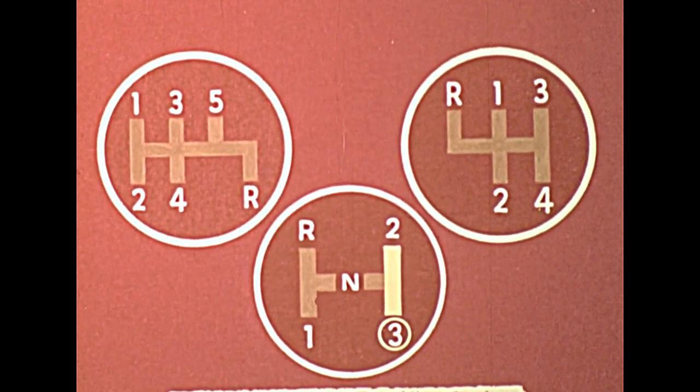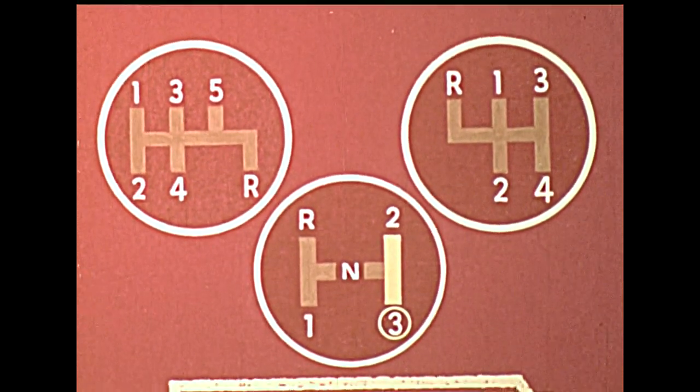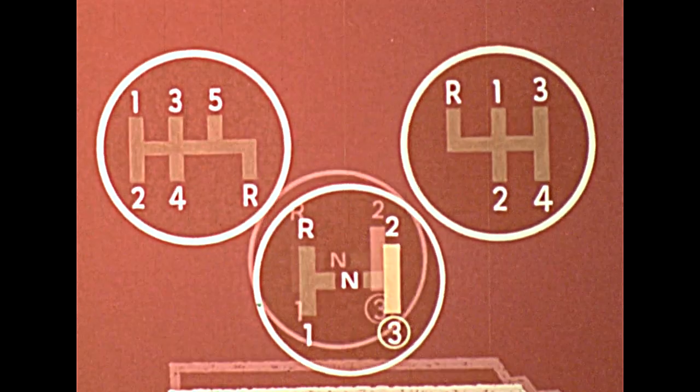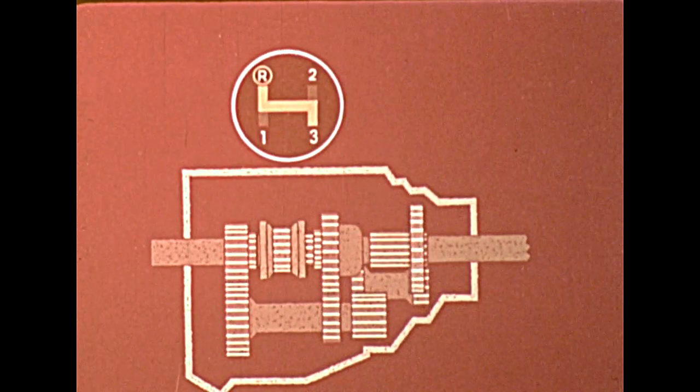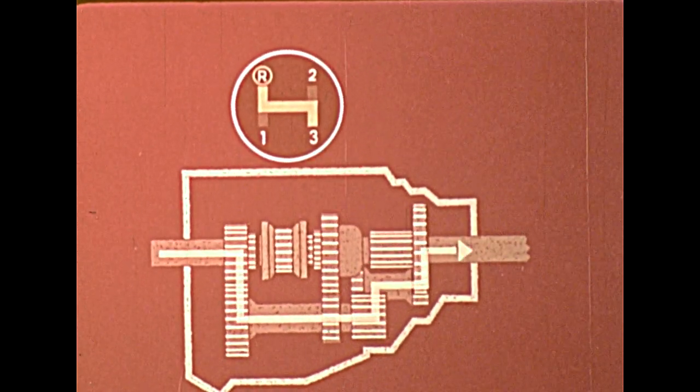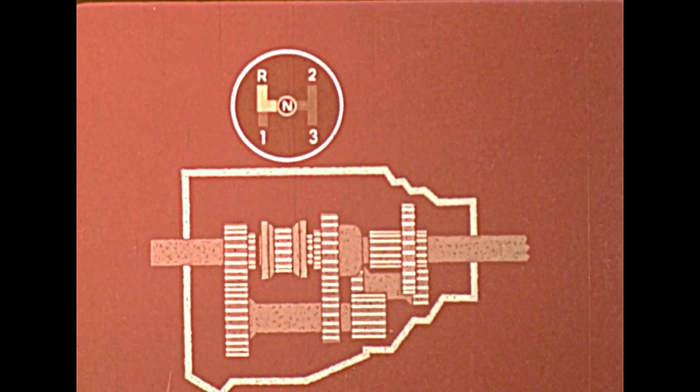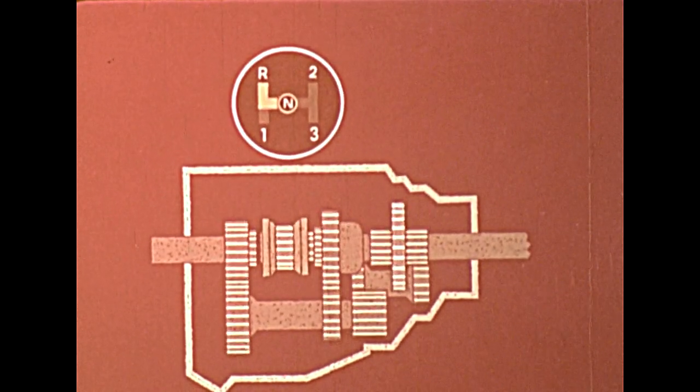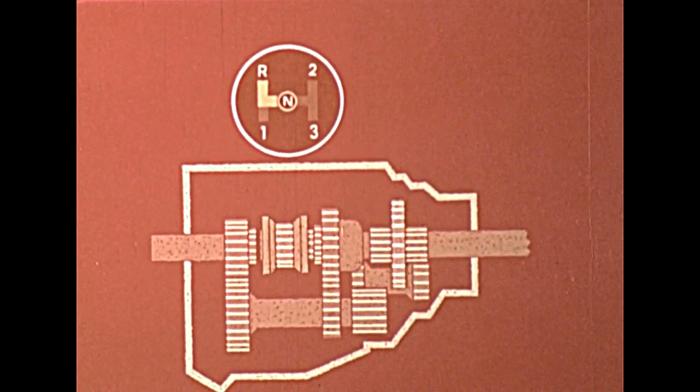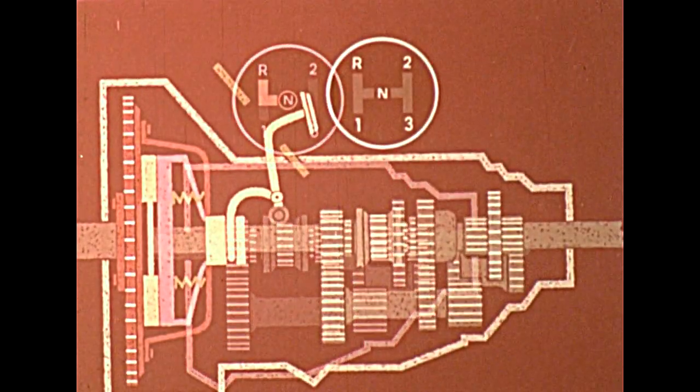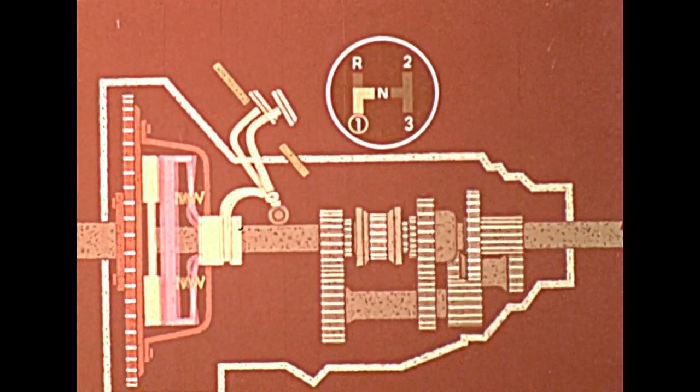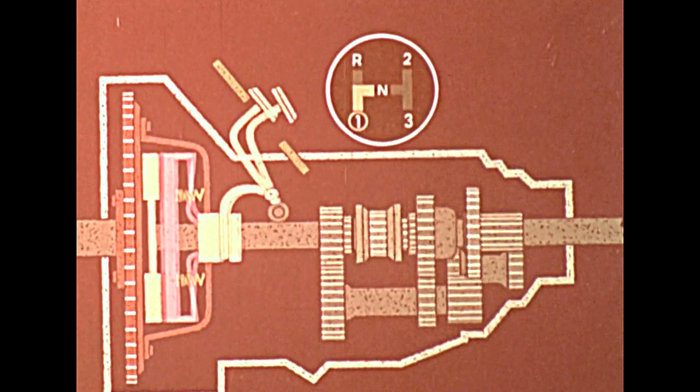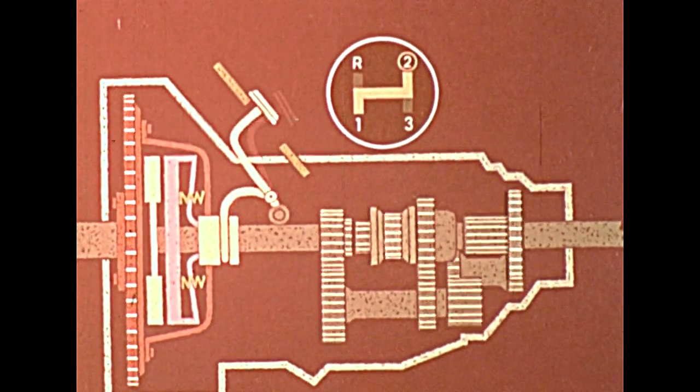Some manual transmissions may have four or more forward speeds. Of course, there's also a reverse setting, so that you can back up the car when you have to. And neutral, in which there is no connection between input and output. The clutch works with the transmission. It is always disengaged when the gears are shifted, so there won't be any strain on them.